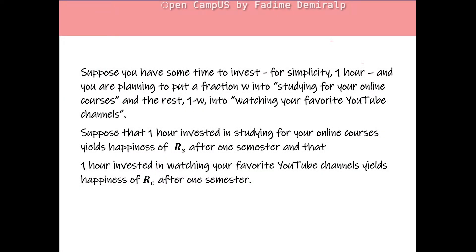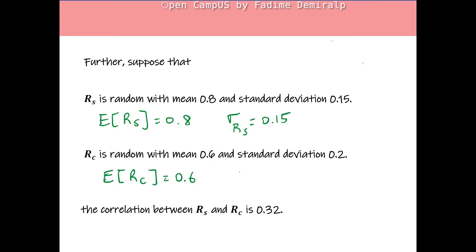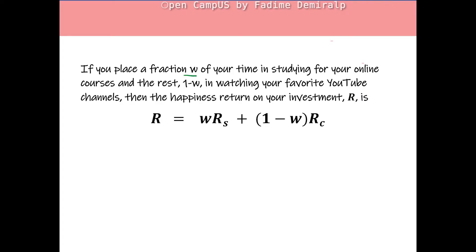Suppose you have one hour to invest and you're planning to put a fraction W into studying for your online courses and the rest, 1-W, into watching your favorite YouTube channels. One hour invested in studying yields happiness RS after one semester, and one hour in YouTube yields happiness RC. RS is random with mean 0.8 and standard deviation 0.15; RC has mean 0.6, standard deviation 0.2, and the correlation between RS and RC is 0.32.